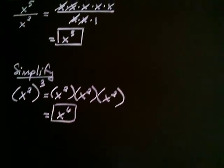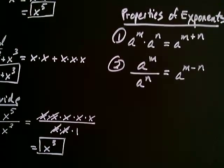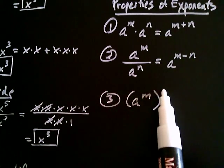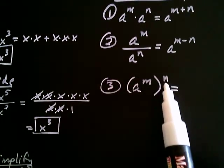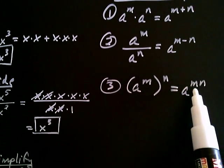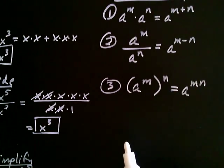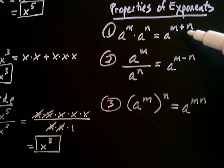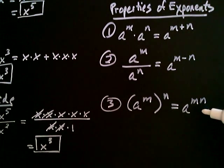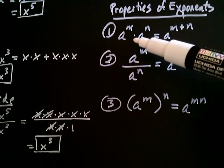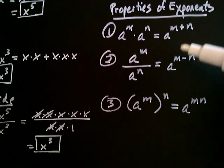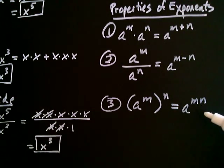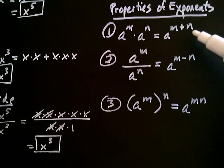Whenever you have an exponential expression raised to another power, you multiply the exponents together. Our third property: a to the m raised to the n equals a to the mn, where mn means m multiplied by n. People often confuse the first and third properties — in one case we're adding the exponents, and in the other we're multiplying them. You add exponents when two expressions with the same base are multiplied together; you multiply exponents when the base appears only once and is raised to another power.